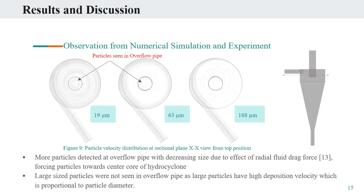Figure 9 shows the top view of particle fellowship distribution when the sectional plane is cut at 0.1 meters from the top part of the hydrocyclone. It can be seen that more particles escape from the overflow pipe with decreasing particle size. This is due to the effect of radial drag force that forces particles to move towards the center core of the hydrocyclone. Large-sized particles of 168 microns are seen in negligible amount in the overflow pipe. This is because of high terminal velocity and centrifugal force that traps the particles towards the wall and finally escape towards the bottom.